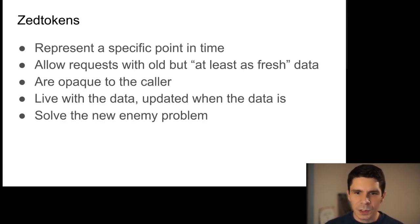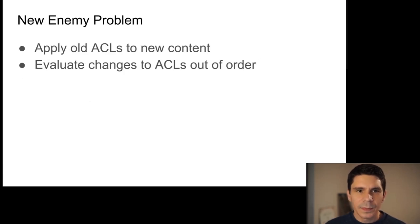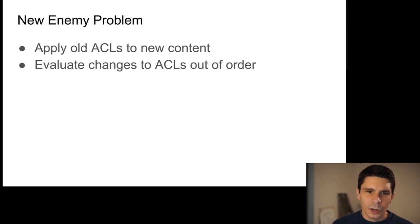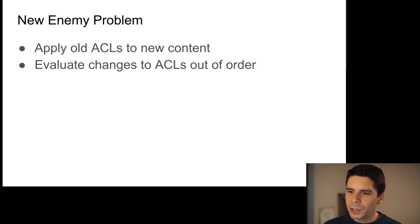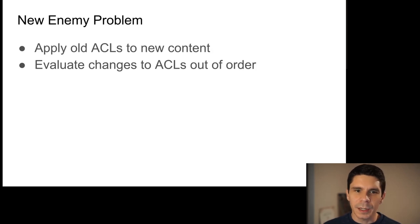Most importantly, Z tokens solve the new enemy problem. The new enemy problem is when you apply old ACLs to new content, or evaluate changes to ACLs out of order. For example, if you add someone to a banned list and then to a reader list in that order, you never want them to be able to read — but if you evaluate out of order, they get access to data they shouldn't have.